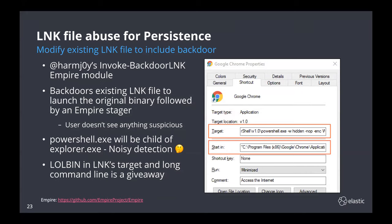Another technique attackers can use is to modify an existing link file to include a backdoor. Each time the user clicks on the link file — say it's Google Chrome — Google Chrome executes as normal, but the backdoor also executes in the background, away from the user. PowerShell Empire has a module called Invoke-BackdoorLNK that enables attackers to carry out this technique easily — it lets you specify a link file to include a PowerShell stager. I remember working at a company where a red team did this — PowerShell was shown as the child of explorer.exe, not something blue teams typically monitor for. The red team had backdoored Windows Server Manager on several servers, so whenever a system administrator logged on, the stager executed and a new C2 channel was established.